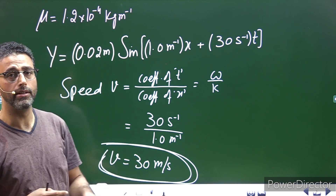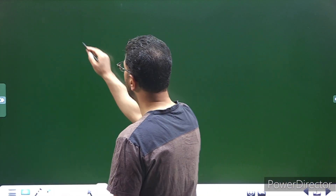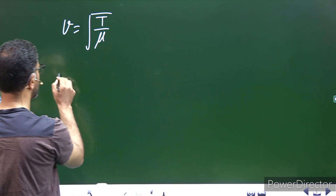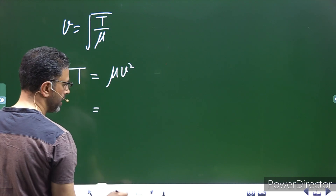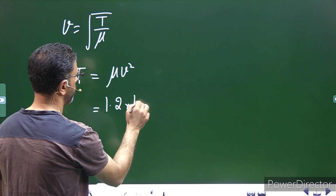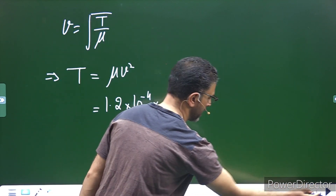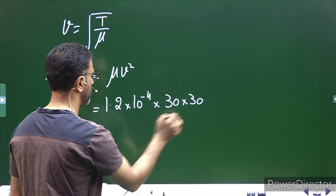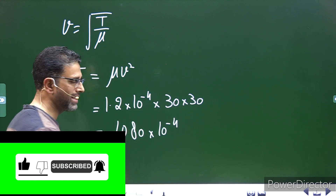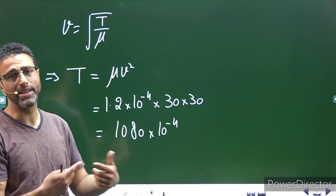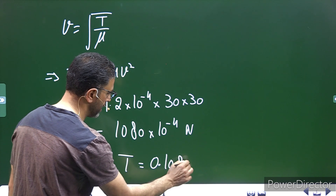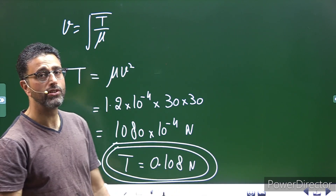अब हमारे पास equation है between speed, mu and tension. Speed is under root of T divided by mu. हमें T निकालना है, तो squaring और cross कर लेते हैं. This implies T = mu × v². Mu दिया हुआ है, that is 1.2 × 10⁻⁴ kg/m, and v = 30 m/s. So, T = 0.108 newtons.